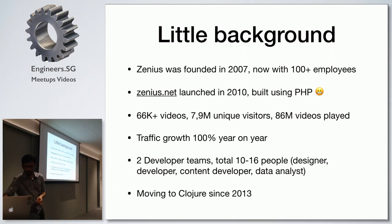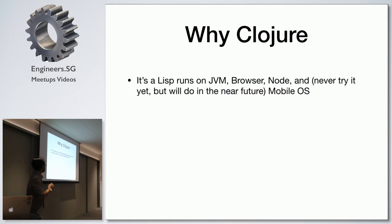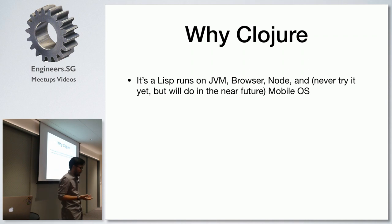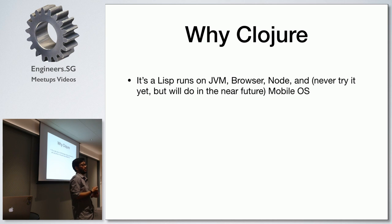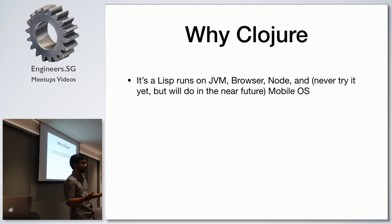We've been moving to Clojure since 2013. Why Clojure? Because it's a Lisp and it runs on the JVM — that was the first thing my CTO told me. We had alternatives like Python or Scala at the time, but the JVM meant enterprise-level reliability, which was important for us.